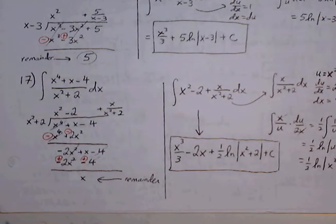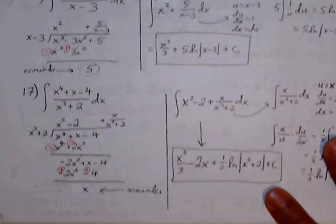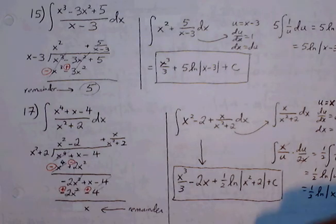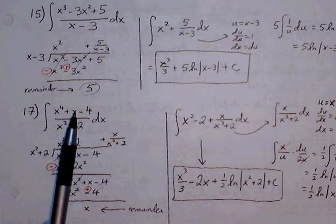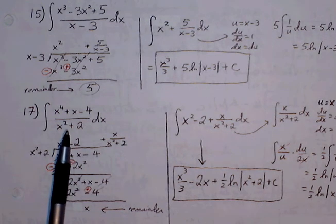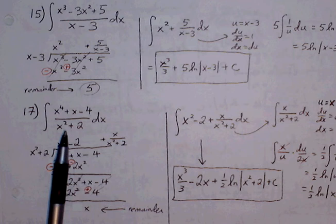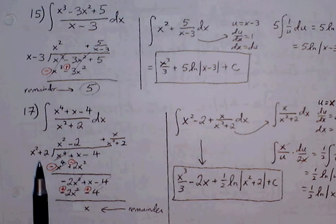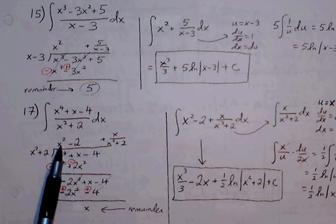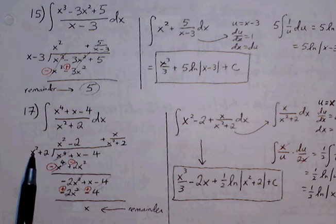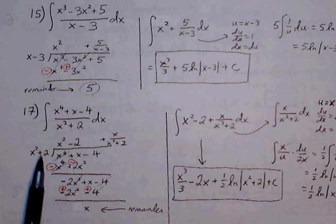Number 17 follows a similar procedure to 15. We check if power rule alone works — it doesn't. Thinking ahead with u substitution, neither the numerator nor the denominator will allow its derivative to cancel out the other. So we go to long division: divisor outside, dividend inside. x squared times what gives x to the fourth — that's x squared. Multiply through: x squared times x squared is x to the fourth, x squared times 2 is 2x squared.